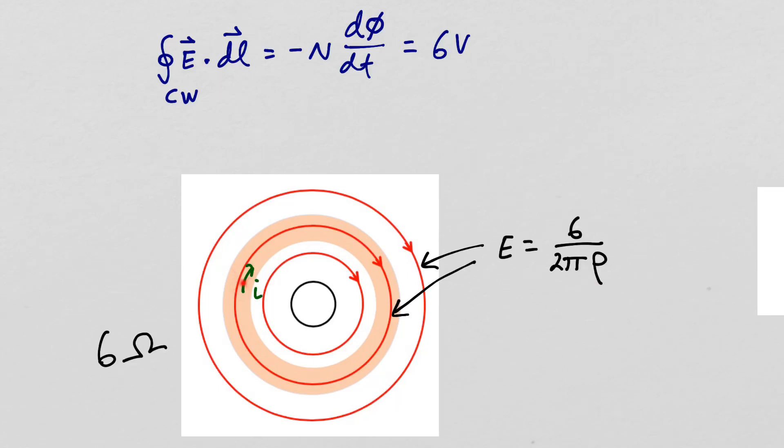The electric field intensity inside this resistor will cause a current to flow and the current will be the same everywhere inside the resistor.